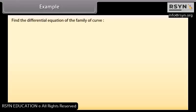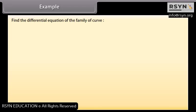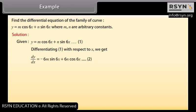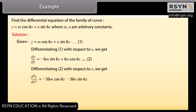Example: find the differential equation of the family of curves y = m·cos(6x) + n·sin(6x), where m and n are arbitrary constants. Differentiating equation 1 with respect to x: dy/dx = −6m·sin(6x) + 6n·cos(6x) (equation 2). Differentiating equation 2 with respect to x: d²y/dx² = −36m·cos(6x) − 36n·sin(6x).